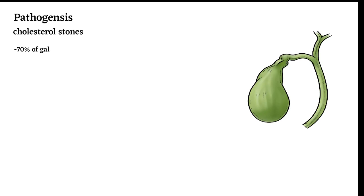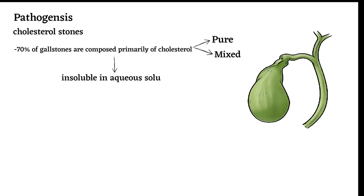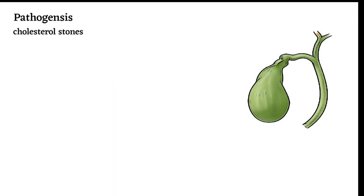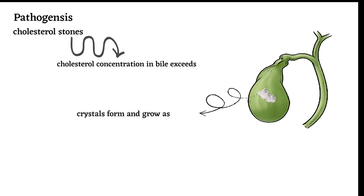More than 70% of gallstones are composed primarily of cholesterol, either pure or mixed. Cholesterol is virtually insoluble in aqueous solution, but in bile it's made soluble by association with bile salts and phospholipids. In the simplest sense, cholesterol gallstones form when cholesterol concentration in bile exceeds the ability of bile to hold it in solution, so crystals form and grow as stones.